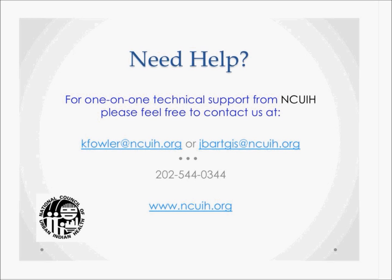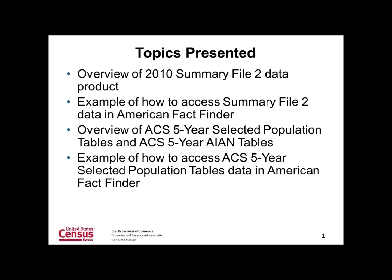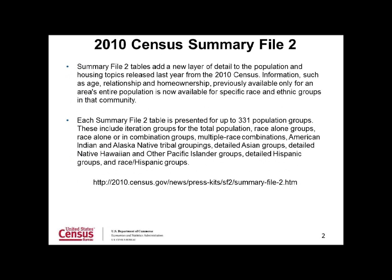Now I would like to turn it over to Tina Norris from the U.S. Census Bureau, who will provide details on searching FactFinder. Hello. I will cover four topics: an overview of the 2010 Summary File 2 data product, a walkthrough of how to access Summary File 2 data in American FactFinder, an overview of the recently released ACS 5-Year Selected Population Tables and ACS 5-Year AIAN Tables, and a walkthrough of how to access ACS 5-Year Selected Population Tables data in American FactFinder.